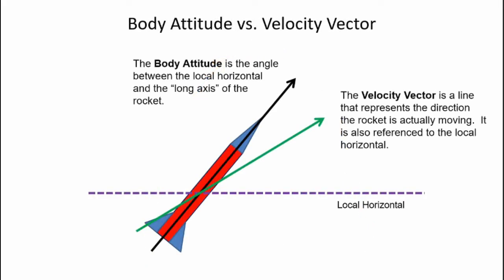Before we move on, we need to understand the difference between body attitude and velocity vector. The body attitude is the angle between the local horizontal and the long axis of the rocket. The long axis of the rocket is represented by this black arrow. The local horizontal is represented by this purple dashed line. So the body attitude is the angle between the black arrow and the local horizontal. The velocity vector is a line that represents the direction the rocket is actually moving, represented by this green arrow. The flight elevation is the angle between the velocity vector and the local horizontal. In some cases, the body attitude will equal the velocity vector, but in many cases it won't.